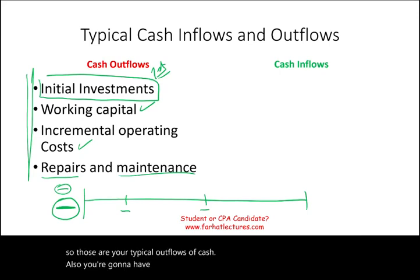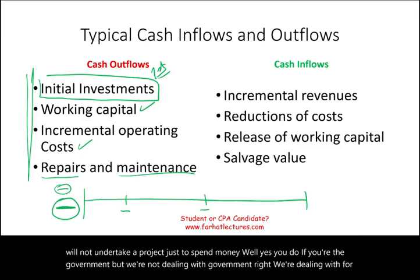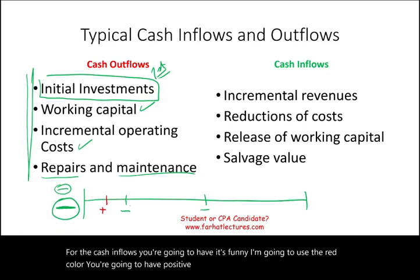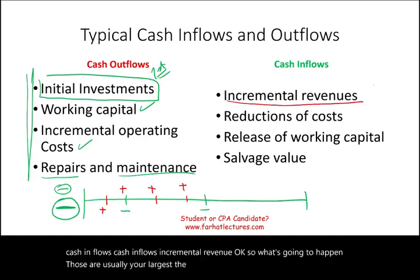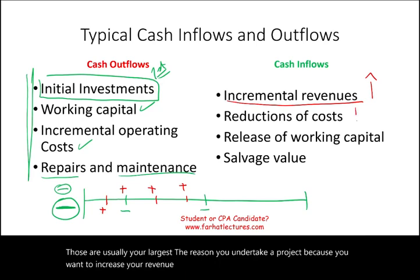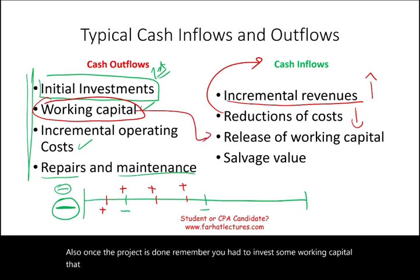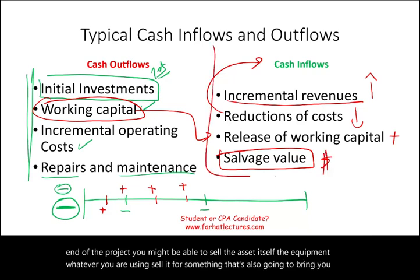You should also have cash inflows — otherwise you wouldn't undertake a project just to spend money. For for-profit corporations, cash inflows include incremental revenue, which is usually the largest reason to undertake a project. Reducing costs is also a cash inflow — you are essentially saving money. Additionally, once the project is done, the working capital you committed is released, bringing back cash. At the end of the project, you may also be able to sell the equipment for its salvage value.